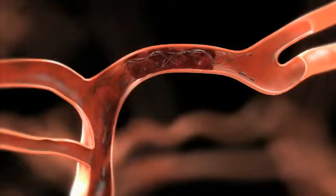The usable length of the deployed Solitaire FR should extend past each side of the thrombus. Tighten the RHV around the microcatheter and angiographically assess the revascularization status of the treated vessel.